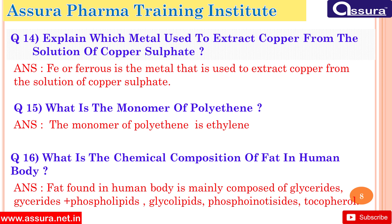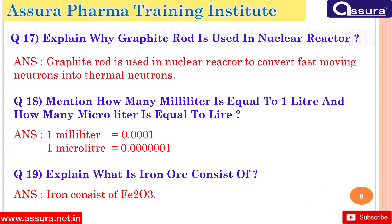What is the chemical composition of fat in the human body? Fat found in the human body is mainly composed of glycerides, phospholipids, and glycolipids. Explain why a graphite rod is used in a nuclear reactor. A graphite rod is used in a nuclear reactor to convert fast-moving neutrons into thermal neutrons.